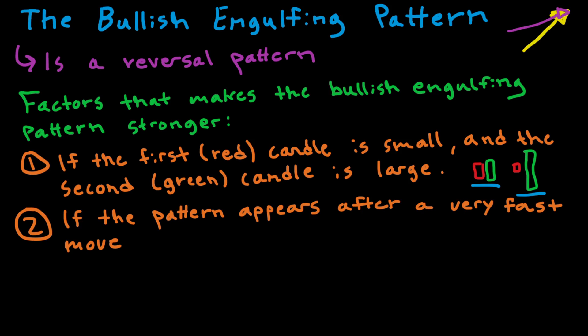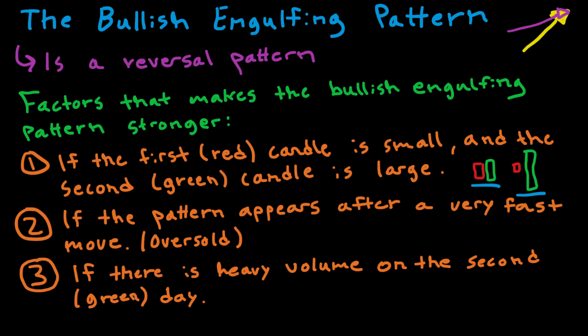The second strengthening factor is if the pattern appears after a very fast and strong downward move, making the market oversold — a bullish engulfing pattern in oversold conditions is stronger. The third factor is if there is heavy volume on the second, green candle day, and conversely, declining volume on the red candle day. Heavy volume on the second day indicates the bulls are changing the trend with strong force. We also want to use the pattern together with support and other technical data.